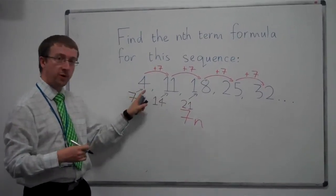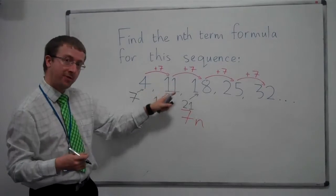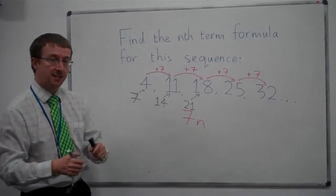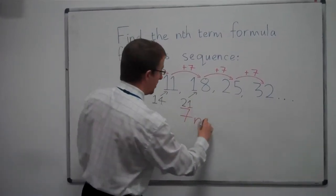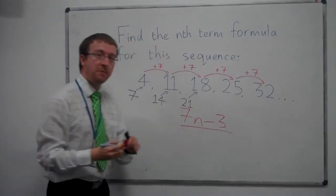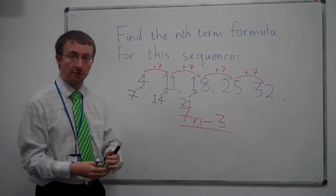To get from 7 to 4, I take away 3. 14 to 11, take away 3. So we need to add that to our nth term formula, that extra instruction before it's finished off.